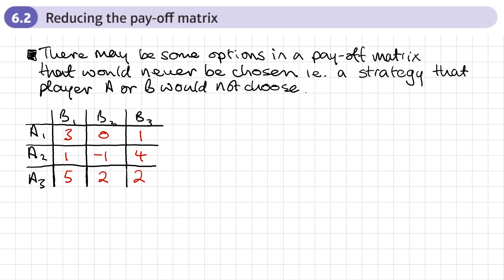This is the second section of Chapter 6 Game Theory, and this section is on reducing the payoff matrix. So now we know about payoff matrices, there may be some options or plays in the payoff matrix that would never be chosen.